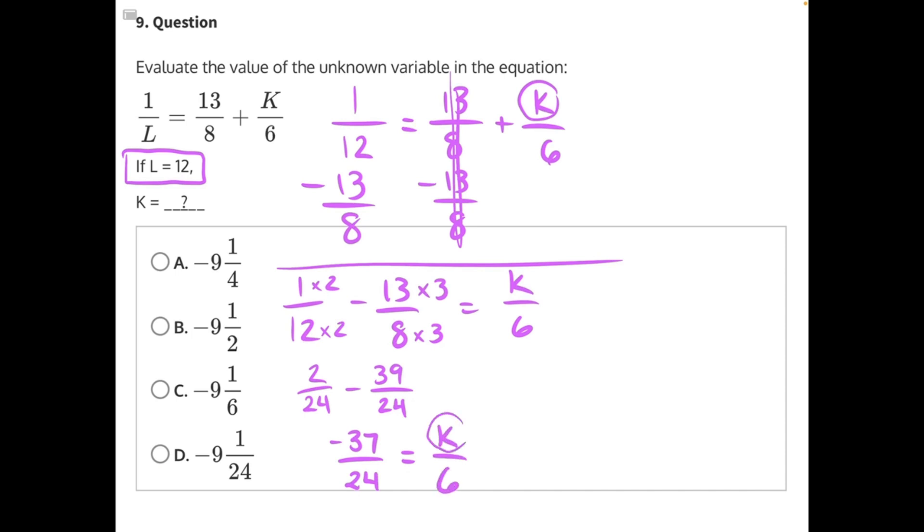Now we can do the final step towards isolating K, which is getting rid of 6. K is being divided by 6, so the opposite operation we need to do is multiplying 6 to both sides of the equal sign. These 6s will cancel. 6 can go into 24 four times, so we can simplify this down to 1 times negative 37 over 4, which would give us negative 37 over 4.